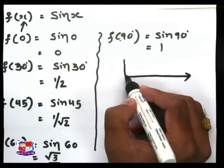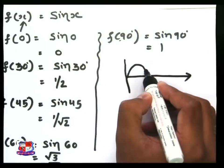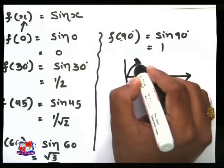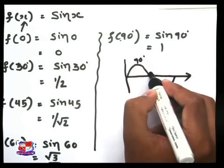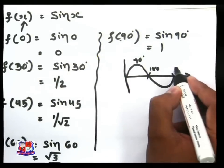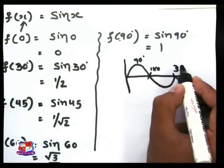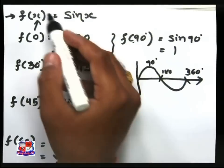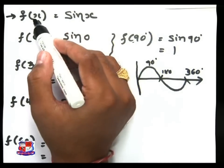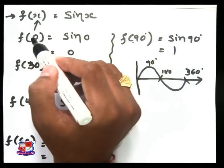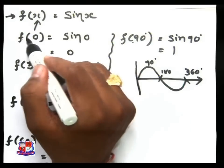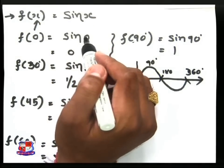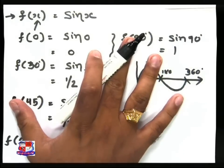The graph looks like this, with 90 degrees, 180 degrees, and 360 degrees marked. So a function means any value we can find — suppose f of x is equal to sin x, we can write f of 0 as sin 0, f of 1 as sin 1, f of 2 as sin 2, using this basic set theory.